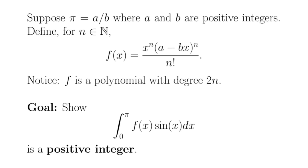Now let's make the assumption that pi is written in the form a over b, where a and b are positive integers, and we define our functions f like this. But now a and b are these special numbers where a over b equals pi. We're not using 7 and 2; we're using numbers where when you divide them, you get pi. And of course we eventually want to show a contradiction — that this assumption that we could write pi as a over b is faulty.